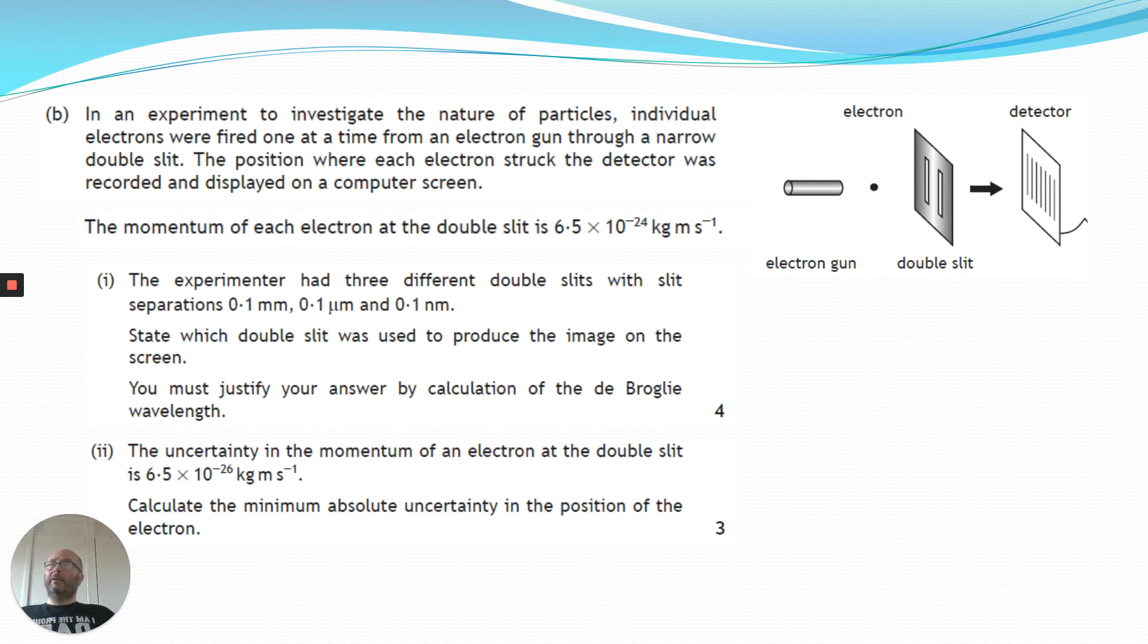Right, so let's have a look at a double slit experiment now. So this one's a little bit more involved. So we have our gun shooting electrons at the double slit. This experiment, or this question has been very kind. It's given us the momentum in the actual question. So we have a momentum for the electrons at 6.5 times 10 to the minus 24 kilograms meters per second. So in part one, the experimenter has three different double slits. And we have slit separations of 0.1 millimeters, 0.1 micrometers, and 0.1 nanometers. And the question is to determine which of the slits was used. And it says we must justify our answer by a calculation of the de Broglie wavelength.